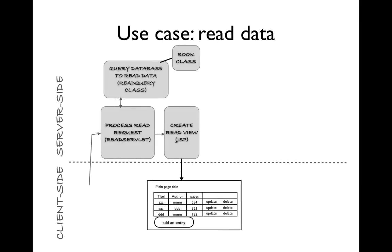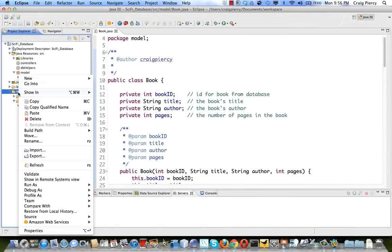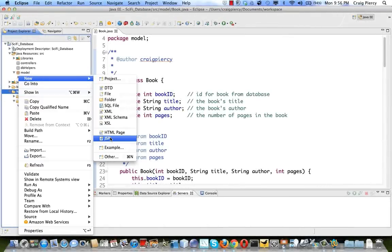Here we see our use case for reading the data. We've created one of the components, namely the Book class. We need to create at least three more — actually four. We'll use index.JSP to get the request going. After that we'll create a ReadServlet in the controllers package, a ReadQuery class in our DB helpers package, and a view JSP in the web content folder.